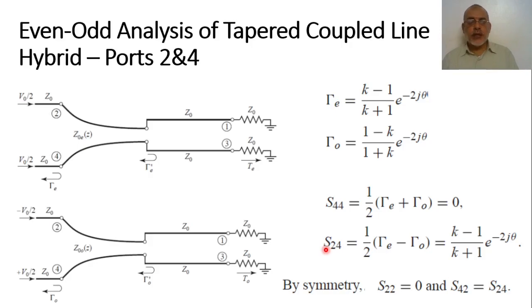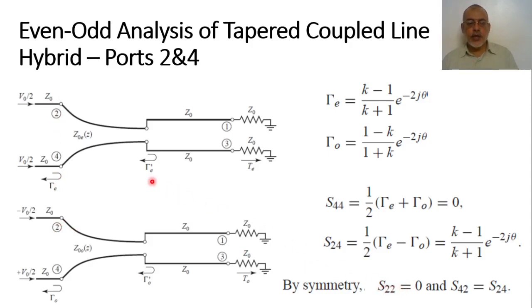Because of the symmetry of this tapered hybrid coupler, we can similarly prove that S₂₂ = 0 (port 2 is also matched). Also by symmetry, S₂₄ = S₄₂, so from these results we obtain S₂₂ and S₄₂.